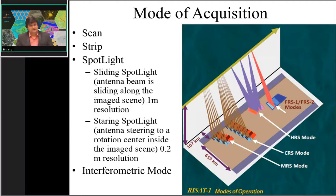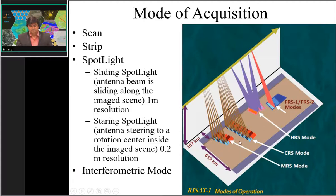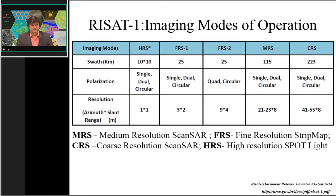RISAT-1 has the capability to provide data in different modes: MRS (medium resolution ScanSAR), CRS (coarse resolution ScanSAR), HRS (high resolution spotlight), and FRS (fine resolution stripmap) mode. MRS represents medium resolution ScanSAR, FRS represents fine resolution stripmap, CRS represents coarse resolution ScanSAR, and HRS represents high resolution spotlight mode. Currently, the high resolution spotlight mode data is not operationally available from RISAT-1, but all other modes are.